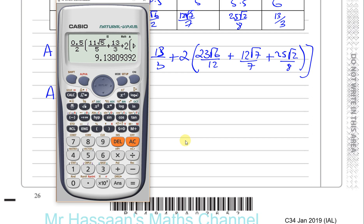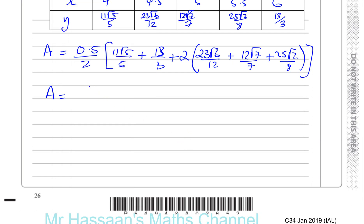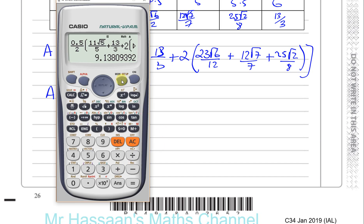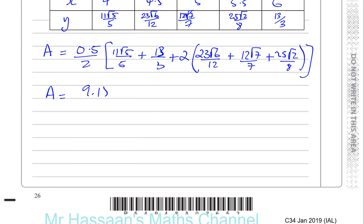That rounds to 9.14 square units to 2 decimal places. So that's Part A of this question.